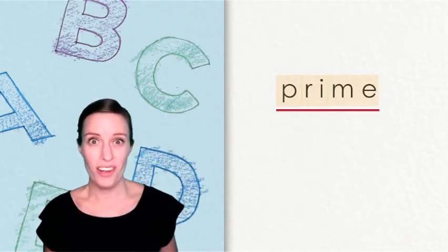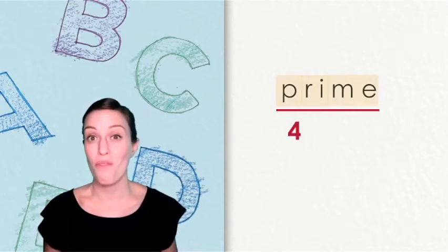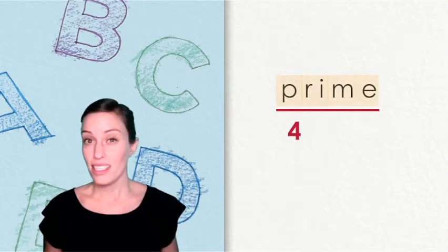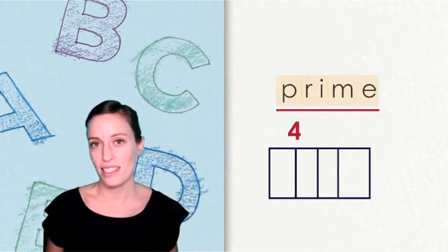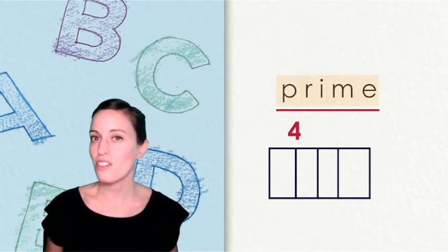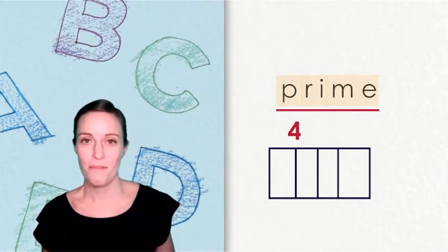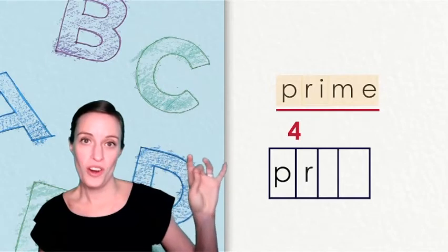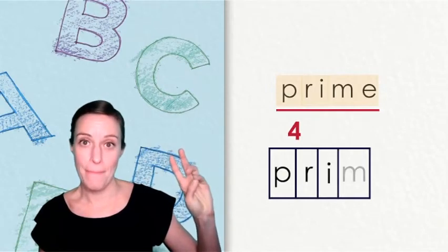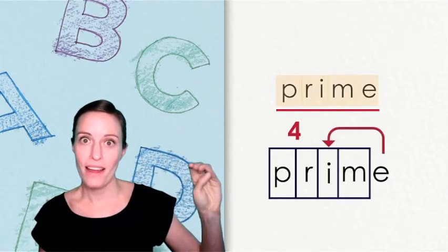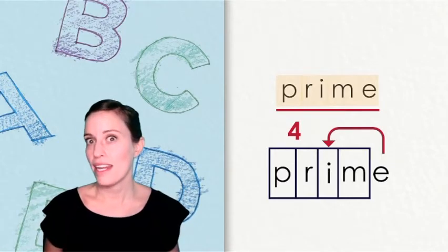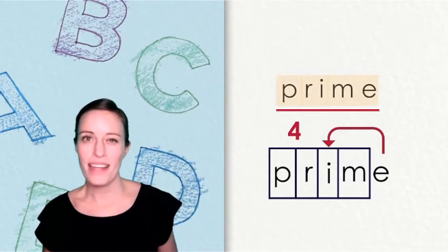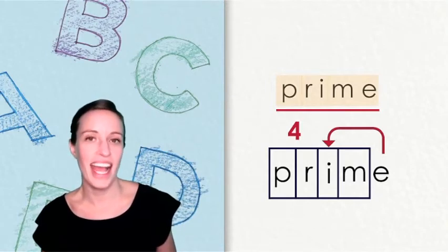So I heard that the word prime had four sounds. Let's put the word prime into our four sound boxes. Point to each box to show me where each sound belongs. P-R-I-M. Prime. And that E goes outside of the box because it's silent. But it is waving its wand and telling the I to say I.